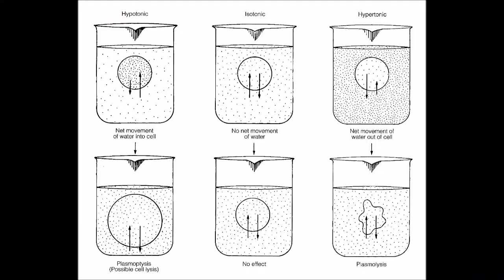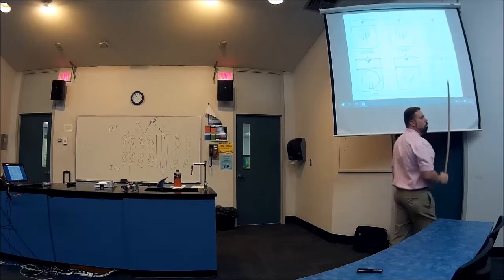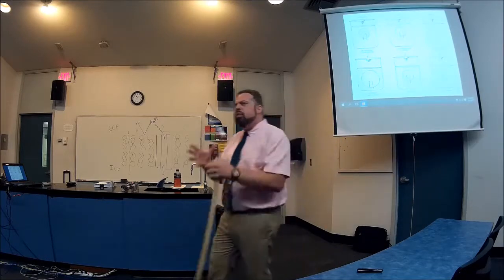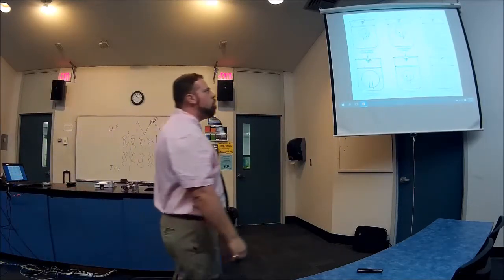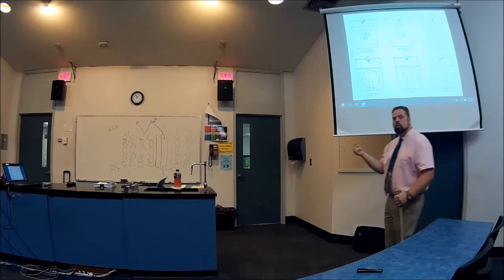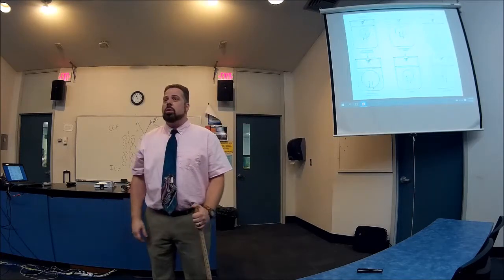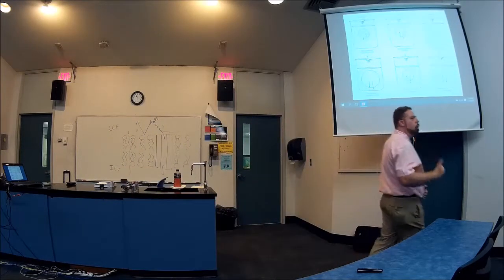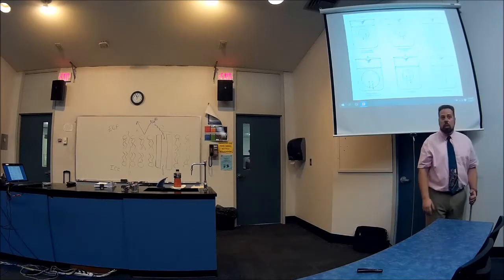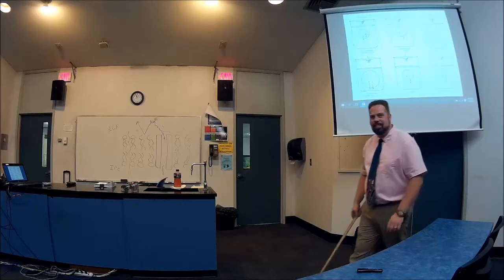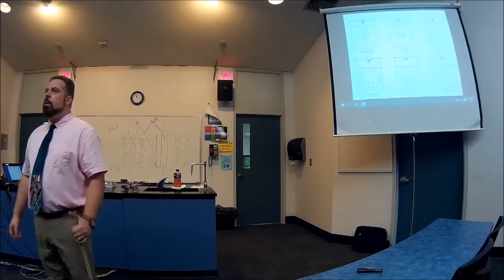Now let's look at a hypertonic solution: you put a cell into something where the dots are very close together — high concentration compared to what's inside. But again, those sodium ions are not allowed to enter or leave the cell, but water is. So water moves outside the cell to equalize spacing. The cell shrivels up — we call that crenation.